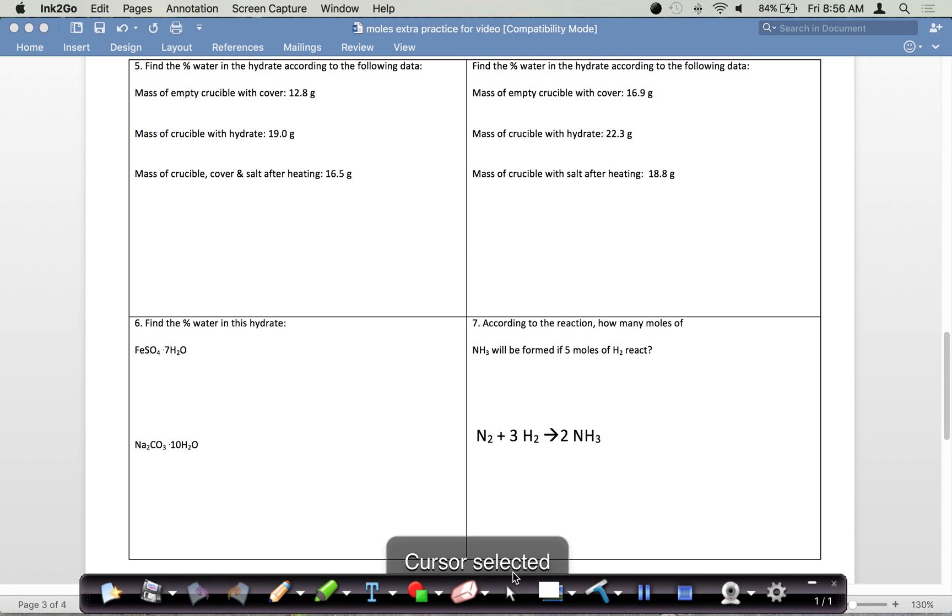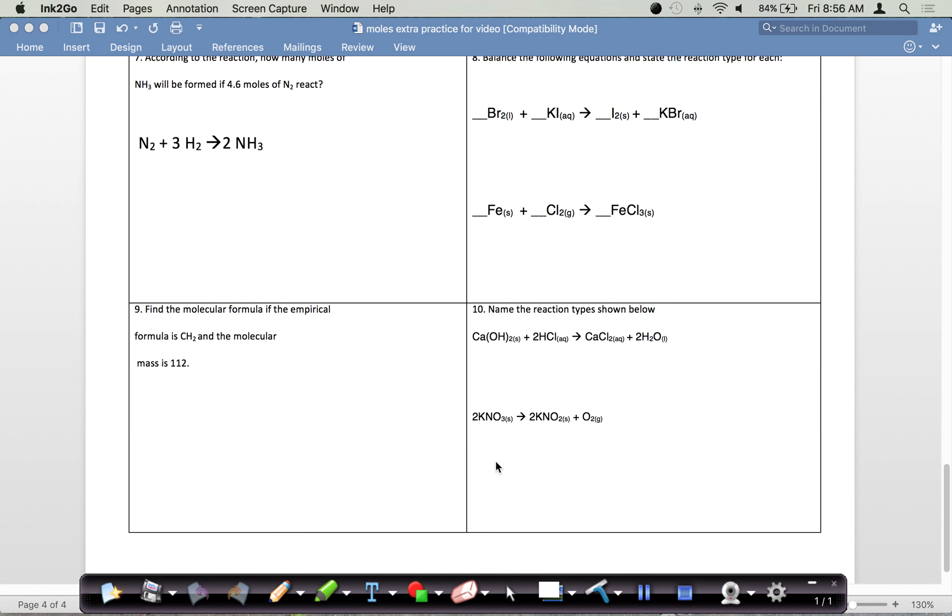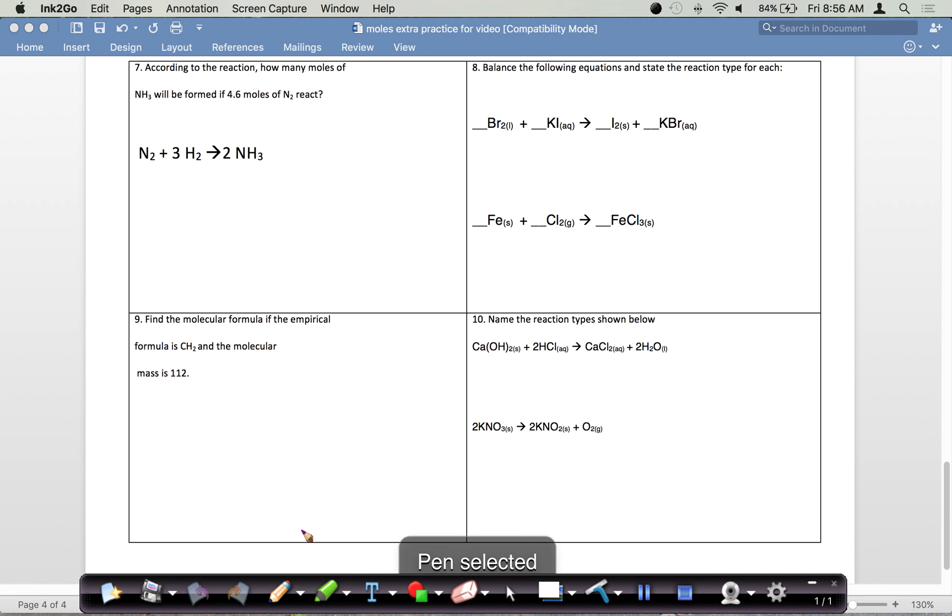Moving on to the last few questions, again we're just doing one of each kind. Number 8 says to balance and state the reaction type. In order to state the reaction type first, I should notice that I have element and element—a single element on each side—and a compound and a compound on each side. So I'm going to call this one single replacement.